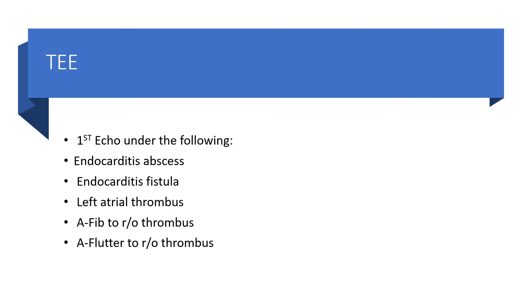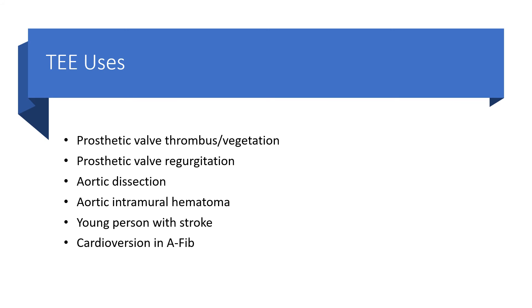Under the following situations, it would be appropriate to bypass TTE and go straight to TEE: endocarditis with abscess, left atrial thrombus, atrial fibrillation to rule out thrombus, atrial flutter to rule out thrombus. You will also call TEE directly bypassing TTE if there is a prosthetic valve with suspected thrombus or vegetation, prosthetic valve regurgitation, aortic dissection, or aortic intramural hematoma.